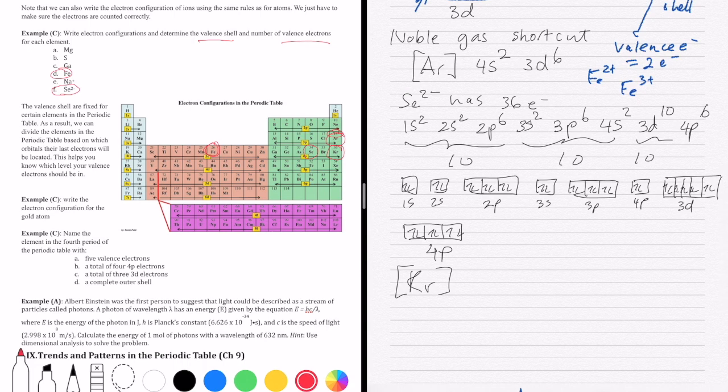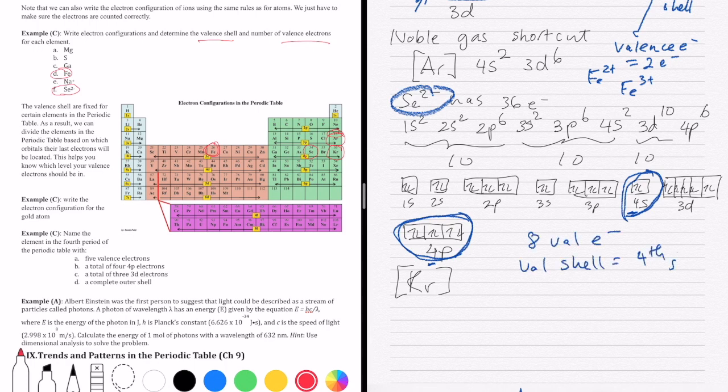If you go to the selenite ion, we're going to look for the largest or the outermost shell. That will be shell number four. Shell number four contains two different orbitals, 4S and 4P. And so there's a total of eight valence electron. And the valence shell is number four, fourth shell. Okay.